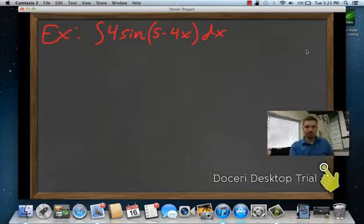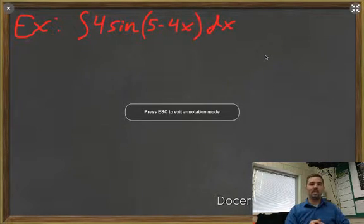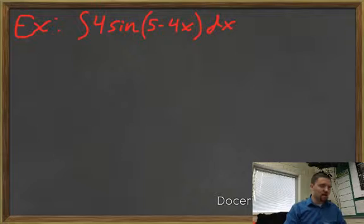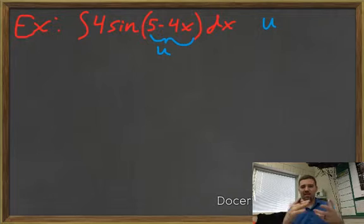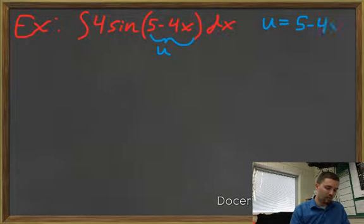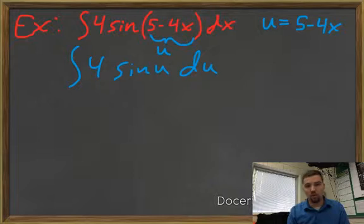Let's try another one. I'm going to go through this one a little faster, but you can always rewind. Make sure you're taking notes. I've got a function inside of a function — there's 5 minus 4x inside of a sine function, so I'm going to call that u. I'll work with u on its own: u is 5 minus 4x. I'm trying to get to the integral of sine of u du, but I've got a problem with this 4 and the du.